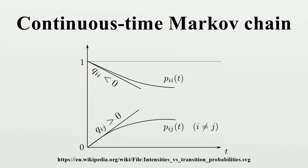Recurrence and Transience. State i is recurrent if, starting in state i, the probability the process returns unboundedly many times to that state is 1. A state i is transient if this quantity has probability 0. If the expected return time is finite, the state is positive recurrent; otherwise it is null recurrent. For transient behavior, write P for the matrix with entries P_ij. The matrix P satisfies the forward equation, a first-order differential equation where the prime denotes differentiation with respect to T.